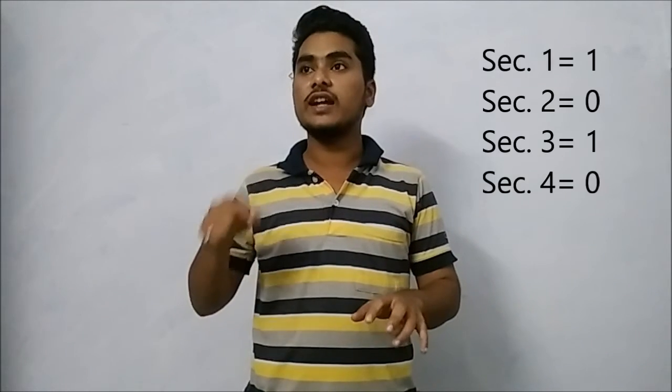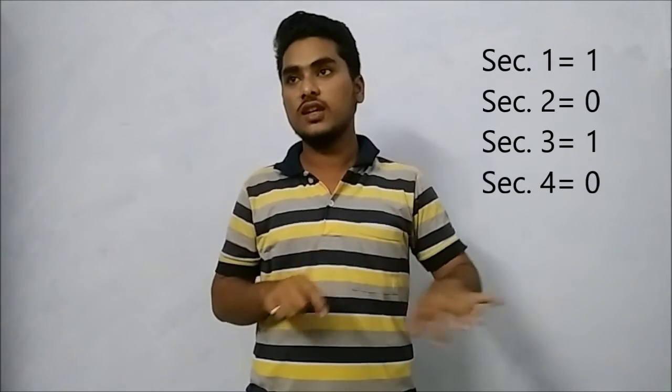Let's take an example. If we want to store the digit 5 inside the hard disk, the computer will first convert it into its binary equivalent, because a computer cannot understand any language other than binary. The binary equivalent of digit 5 is 101. It will store digit 5 in the form of binary, taking sectors and writing the binary values in each of the sectors.